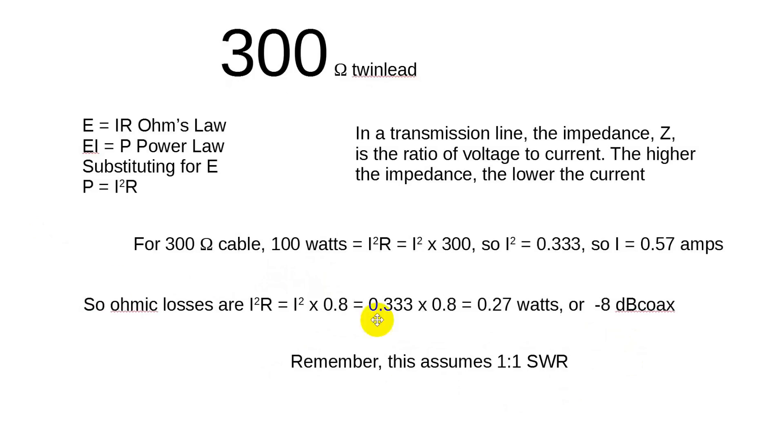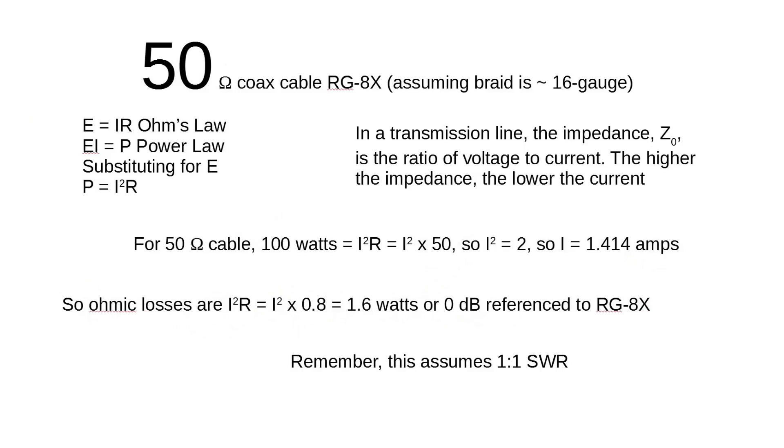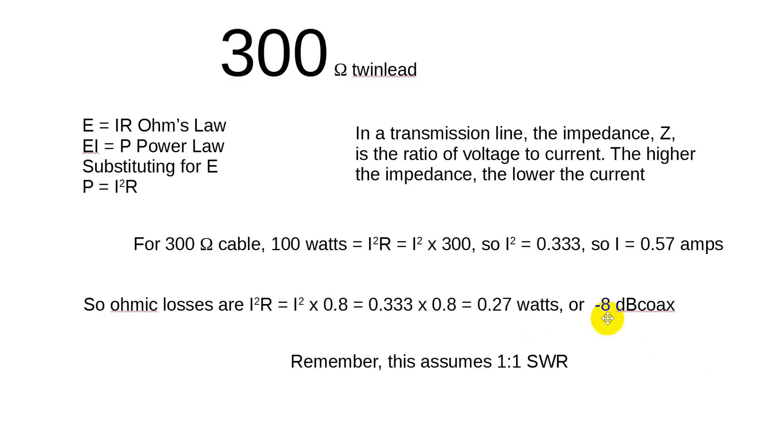Now let's look at 300-ohm twin lead. So for 300-ohm cable, 100 watts equals I²R equals I² times 300. So I² is 0.333. So the current, instead of being 1.414 amps, is quite a bit less than that. It's 0.57 amps. So the ohmic losses are I² times R or I² times 0.8 is 0.333 times 0.8 is 0.27 watts.